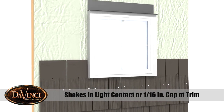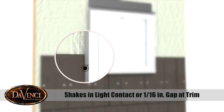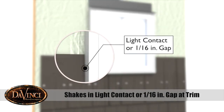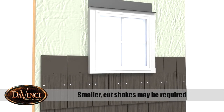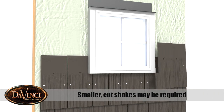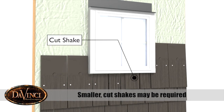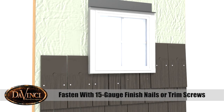When abutting shakes to the window bottom and side trim attachments, the shakes may be installed with light contact or a 1/16th inch gap. Depending on the window or door size and course layout and reveal chosen, in some cases smaller, less than full size pieces will be required. These may be fastened with a corrosion resistant 15 gauge finish nail or trim screws.